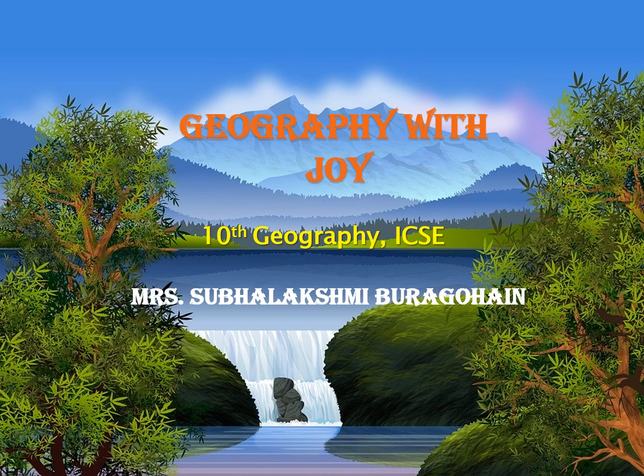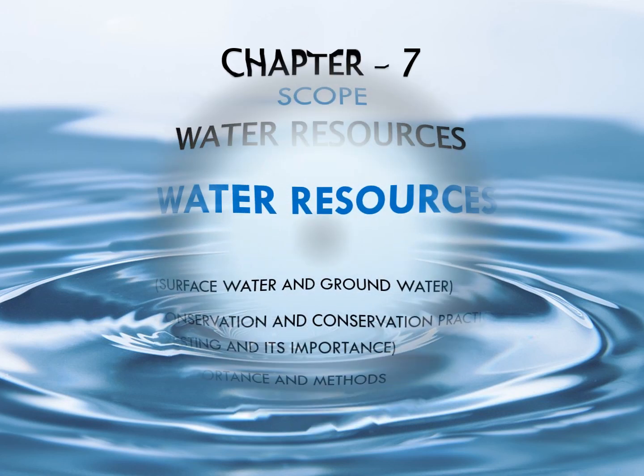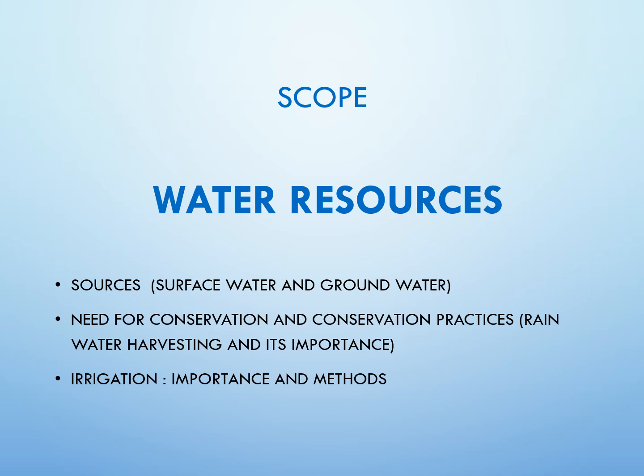Today's class is on Water Resources — Chapter Number 7. The scope of the chapter includes: sources of water resources, surface water and groundwater, need for conservation and conservation practices, rainwater harvesting and its importance, and irrigation — its importance and methods.